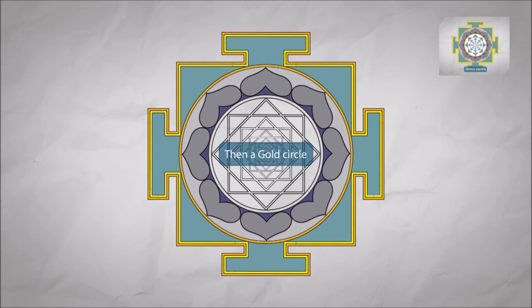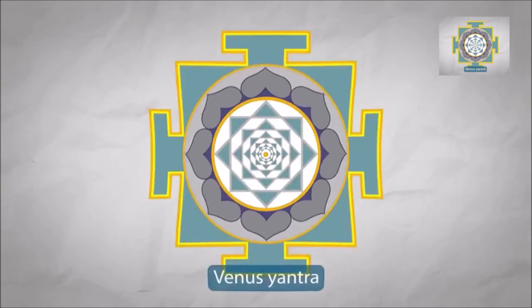Then a gold circle. Triangles are Bhupur color. Space is white. Lines are silver. Then the bindu is gold. Venus Yantra. You can adjust this color.